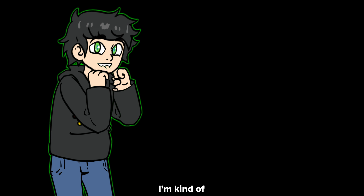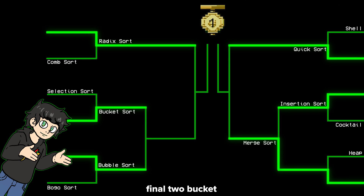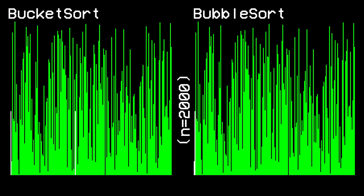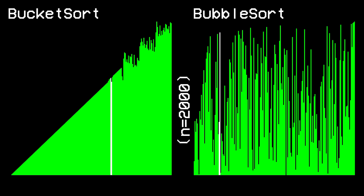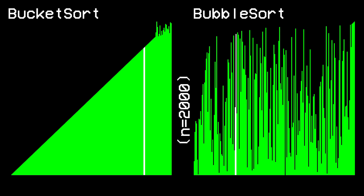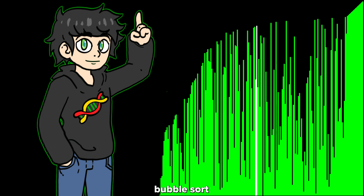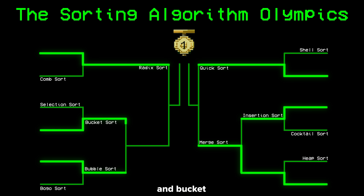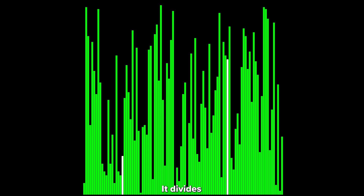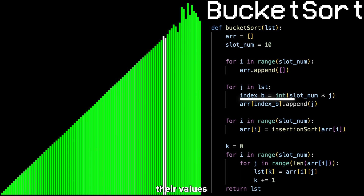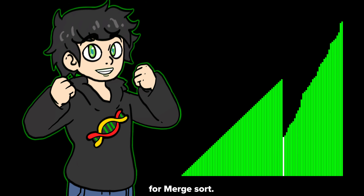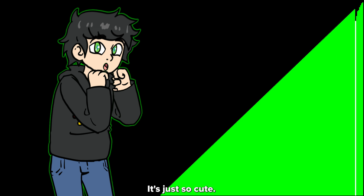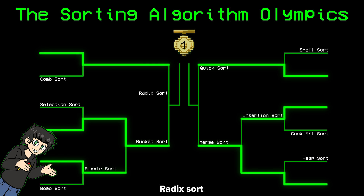Quarterfinal two: bucket sort versus bubble sort. As expected, bubble sort got absolutely destroyed and bucket sort advances to the semi-final. Bucket sort is actually pretty cool — it divides the data into buckets based on their values and then merges them. Semi-finals! I'm kind of rooting for merge sort. First semi-final: radix sort versus bucket sort.